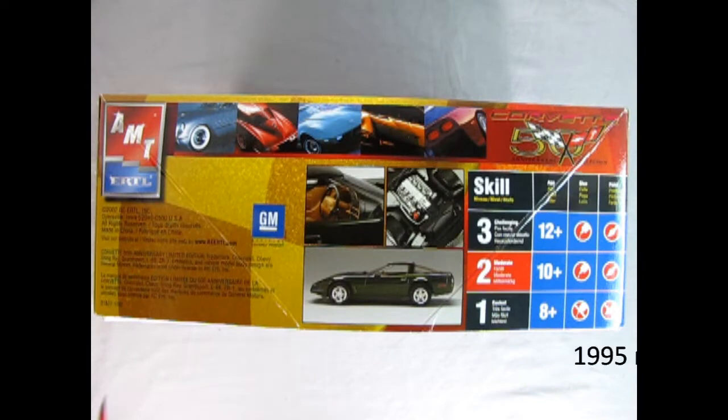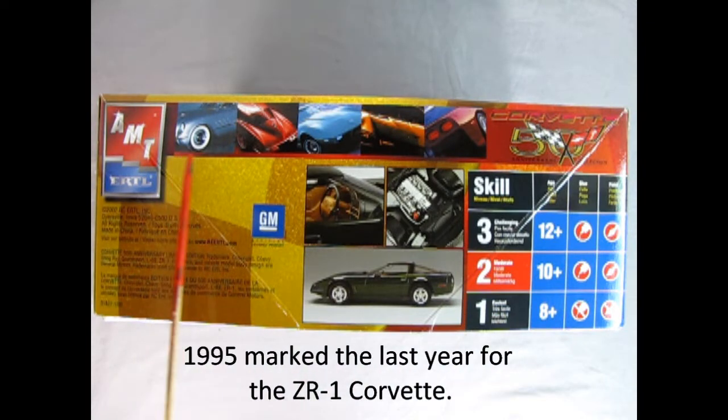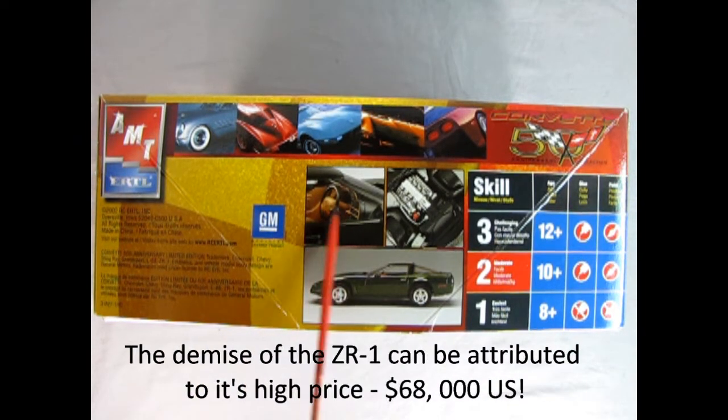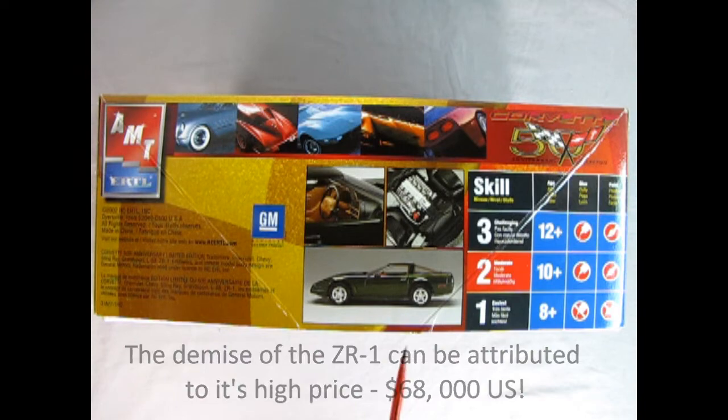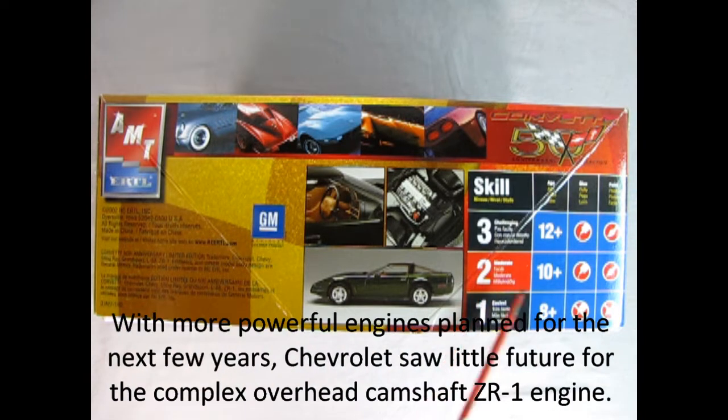This is a skill level 2 kit for ages 10 and up and is the Corvette 50th anniversary edition. On this side of the box we have those amazing photos showing the history of our Corvette through the cars, and then here we've got a nice picture of our interior, our engine, and the side profile of the car.